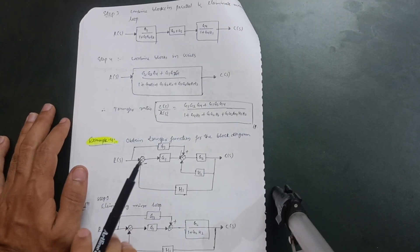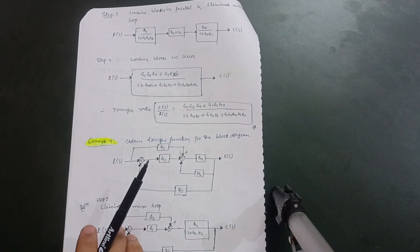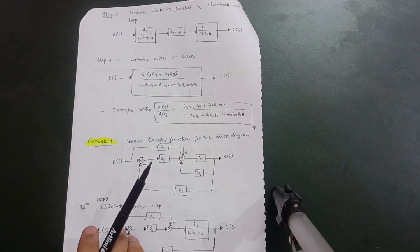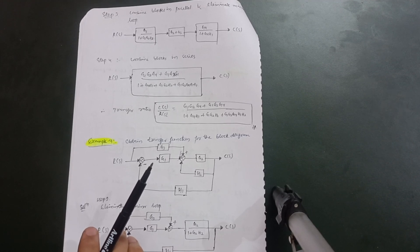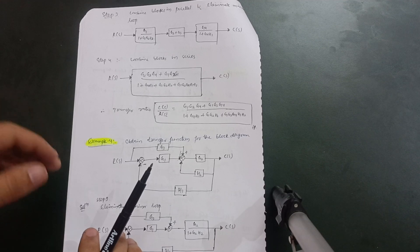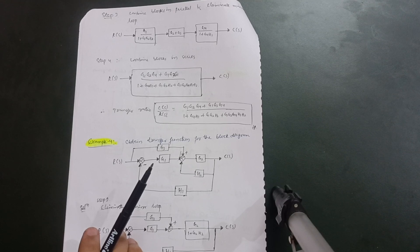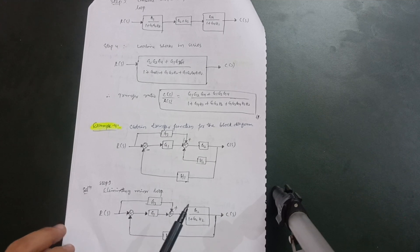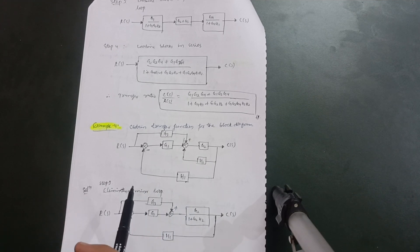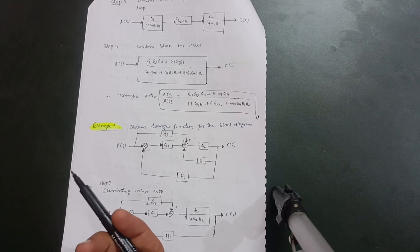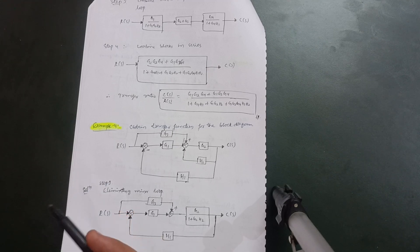These problems are straightforward — the key is to remember the seven rules applicable for block diagram reduction: reducing to canonical form by eliminating minor loops, combining blocks in series, combining blocks in parallel, and shifting takeoff or summing points. It is better to solve many problems for practice. I have written at least eight problems in these notes and will share the link in the description box so you can access the Control Engineering Module 3 notes. In the next video, we will discuss signal flow graphs.